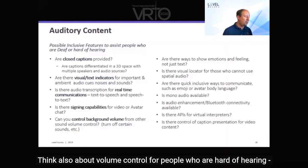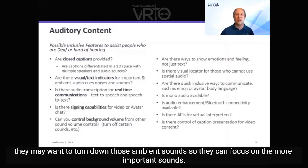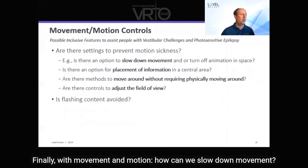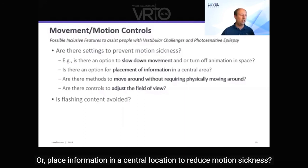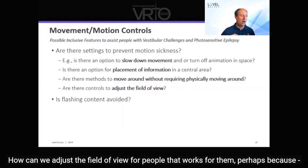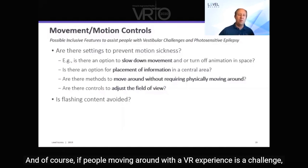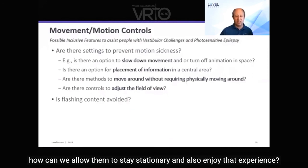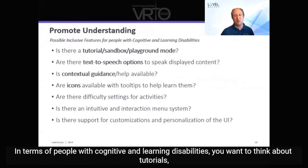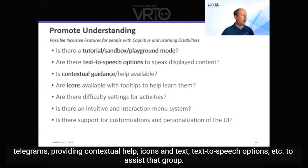Think about volume control for people who are hard of hearing — you may want to turn down ambient sounds so they can focus on more important sounds. With movement and motion, consider how to slow down movement or place information in a central location to reduce motion sickness, and how to adjust field of view to prevent motion sickness or accommodate field loss. Allow users to stay stationary and still enjoy a VR experience. For people with cognitive and learning disabilities, think about tutorials, playgrounds, contextual help, icons with text, and text-to-speech options.